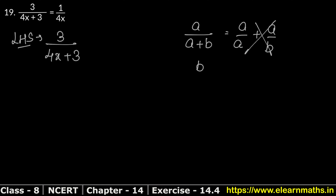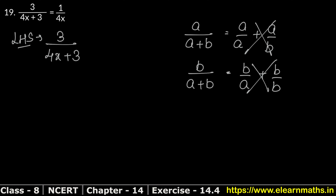Here b is 3 and a is 4x. Since it is in the form b upon a plus b, we cannot write it differently. So solving 3 upon 4x plus 3 does not give 1 upon 4x. This is our answer.